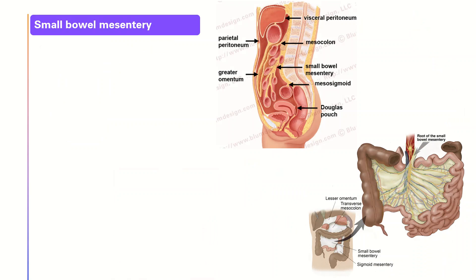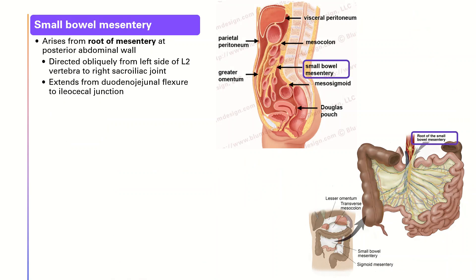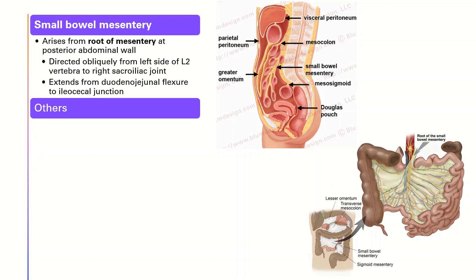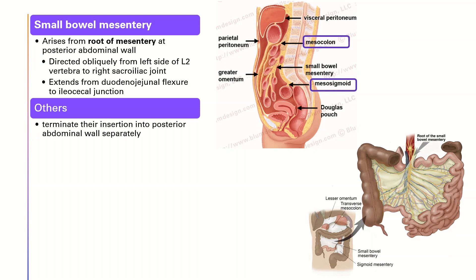For the small bowel mesentery, it arises from the root of the mesentery at the posterior abdominal wall. It is directed obliquely from the left side of the L2 vertebra to the right sacroiliac joint, and extends from the duodenojejunal junction to the ileocecal junction. For the others, such as the mesocolon and mesosigmoid, they terminate their insertion into the posterior abdominal wall separately.